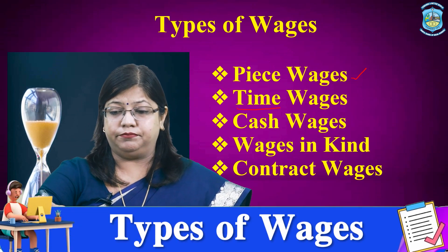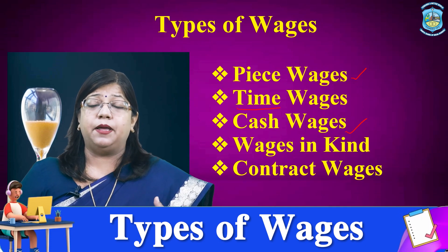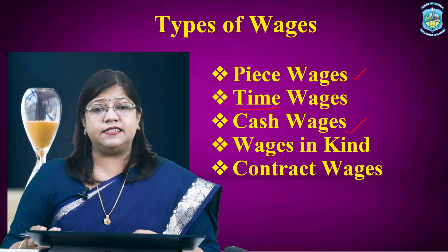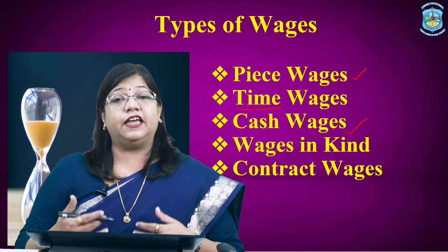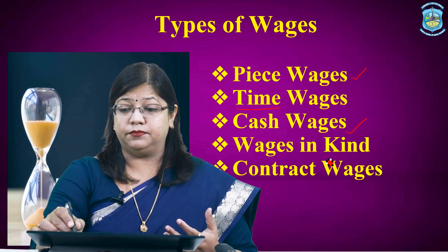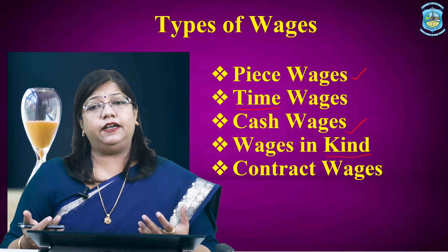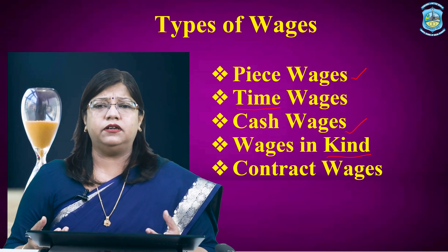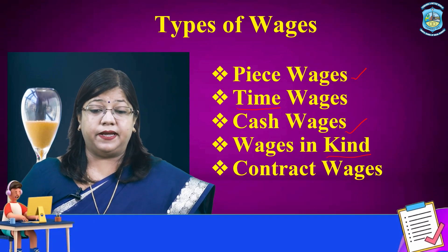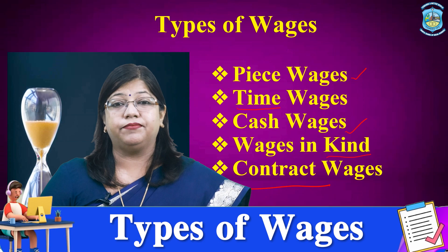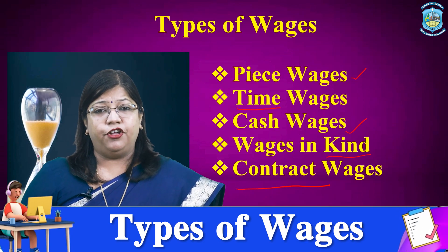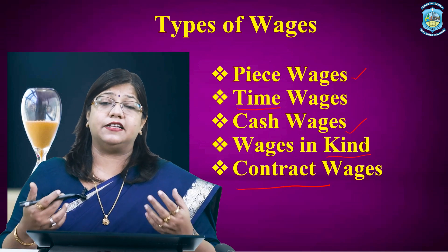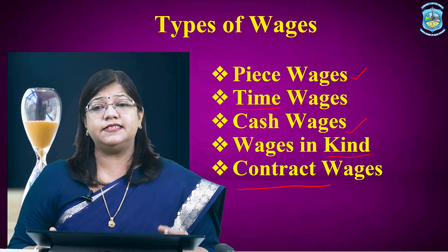Cash wages refers to the wages paid to the labourer in terms of money. The salary paid to a worker is an instance of cash wages. Wages can also be paid in kind. When the labourer is paid in terms of goods rather than cash, it is called kind wages. These types of wages are quite popular in rural areas. The other kind of wage is contract wage. Under this type, the wages are fixed in the beginning for complete work. For instance, if a contractor is told that he will be paid rupees 25 lakh for the construction of a building, it will be termed as contract wages.